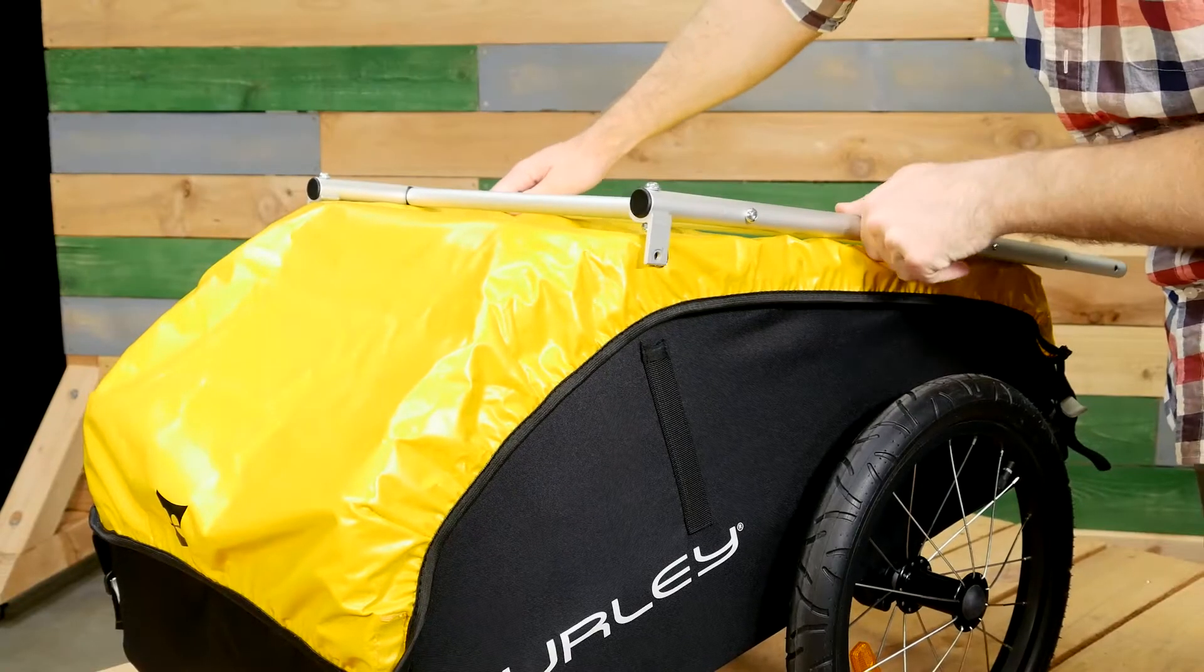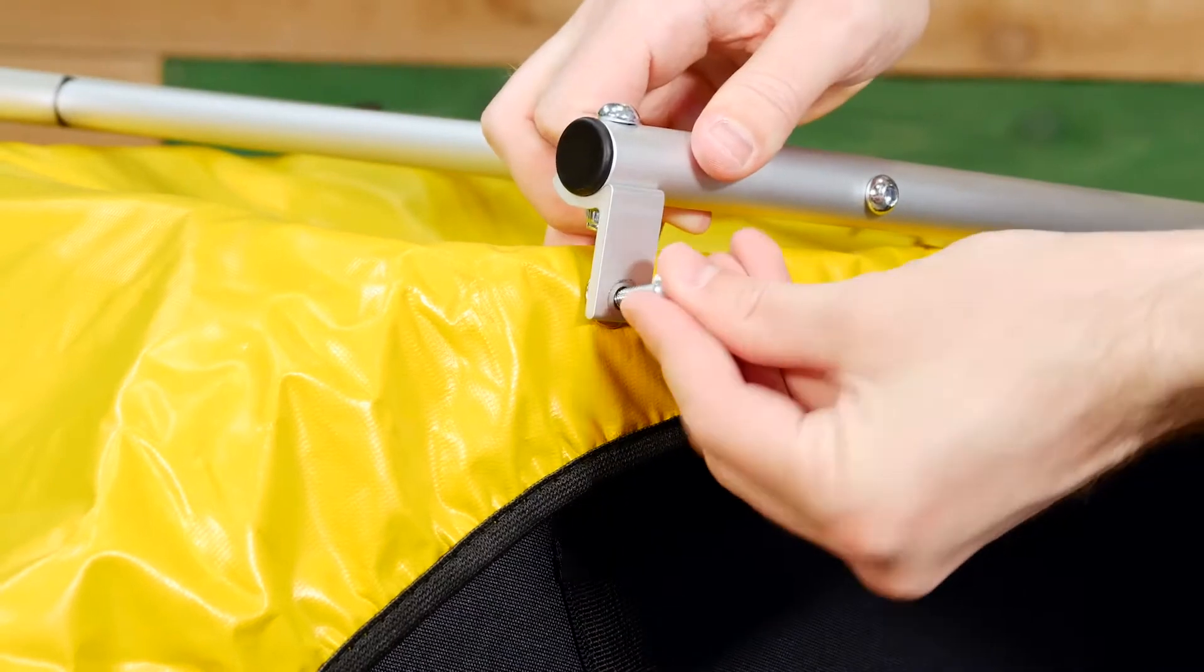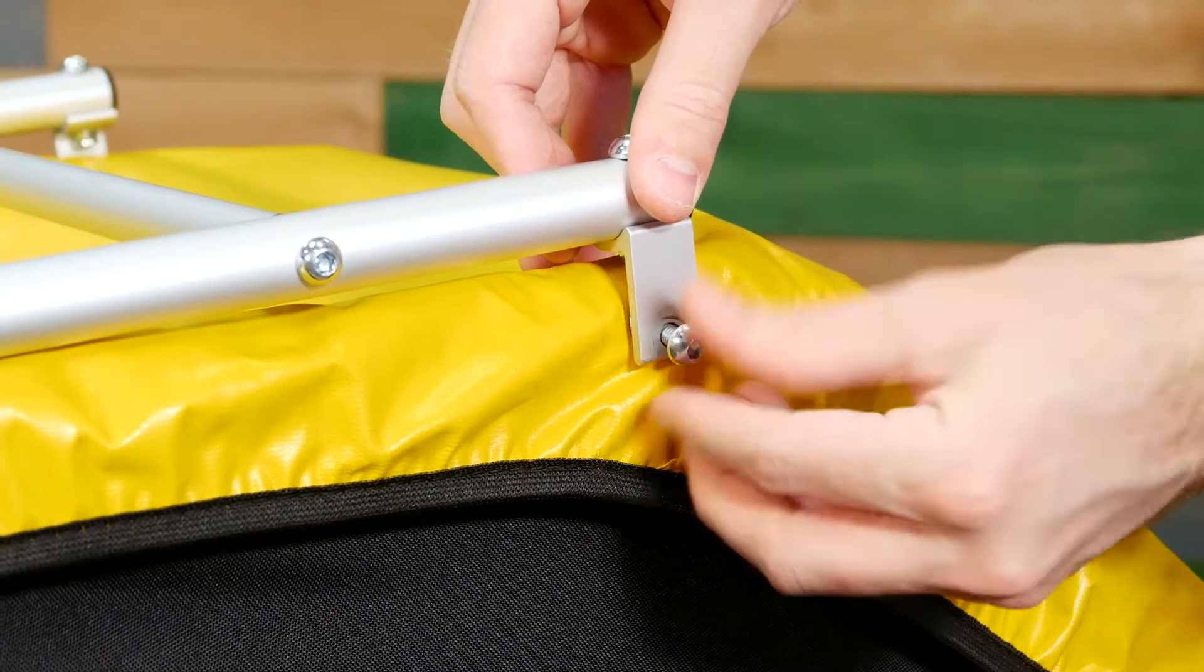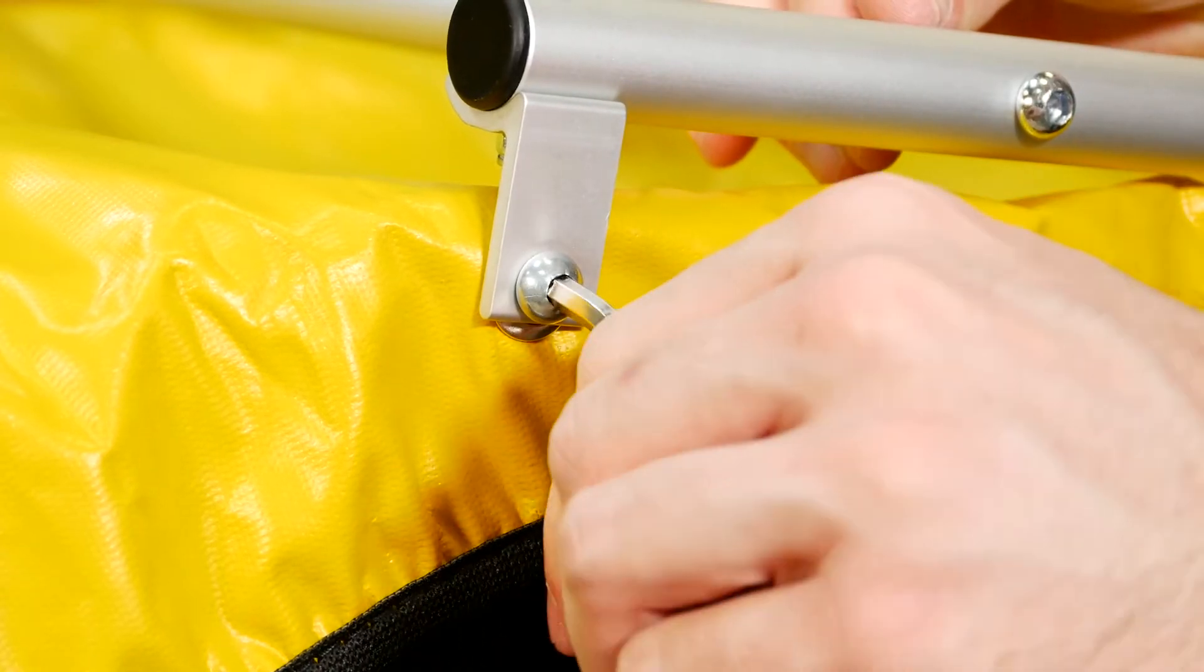Then take the cargo rack and place it over the holes. Put the screws back in place. Hand tighten it first to line the rack up on the opposite side, then tighten each side with a hex key.